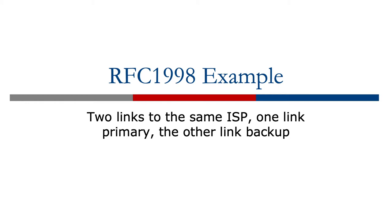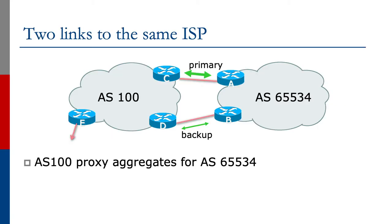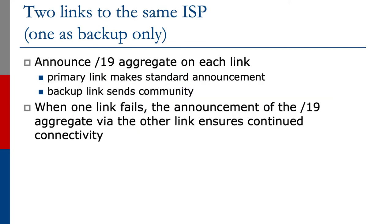As a practical example, we have two links to an ISP — one primary, one backup. On the left of the diagram is AS100 with routers C, D, and E. On the right is AS65534 with routers A and B. The link between A and C is the primary; the link between B and D is the backup. AS100 is going to aggregate for AS65534. The approach is to announce the slash-19 aggregate on each link. The backup link sends a community signalling AS100 to set a lower local preference. When one link fails, the slash-19 aggregate announcement continues on the other link, ensuring continued connectivity.